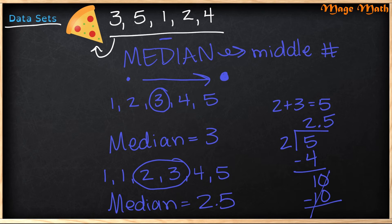Just remember, if you have one number, like up here, that's your median and you're done. But if you have two numbers, you have to find the average.